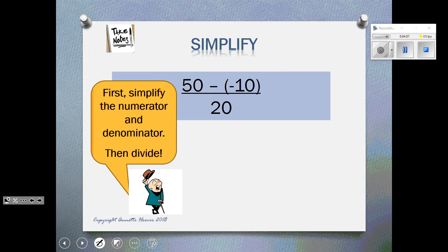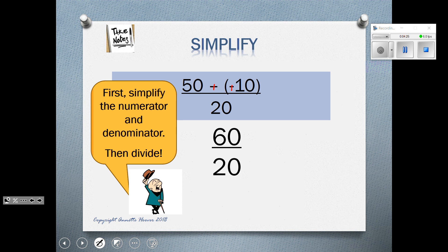Again, on the top, we need to simplify the numerator. So we remember our adding or subtracting by integer rule. 50 minus a negative 10. We want to add the opposite, or do our click-click. 50 plus 10 is 60, so we have 60 divided by 20. Two positives make a positive answer of 3.